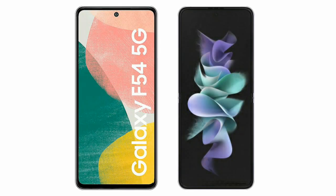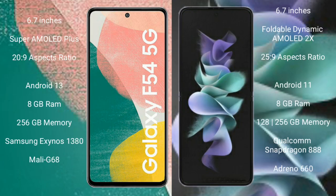I will compare the new Samsung Galaxy A54 with Samsung Galaxy Z Flip 3. The Samsung Galaxy A54 comes with a 6.7-inch Super AMOLED Plus display, while the Samsung Galaxy Z Flip 3 comes with a 6.7-inch Foldable Dynamic AMOLED display.